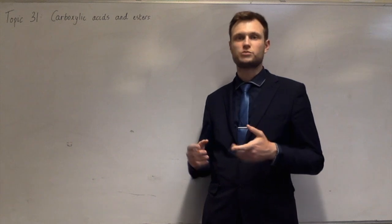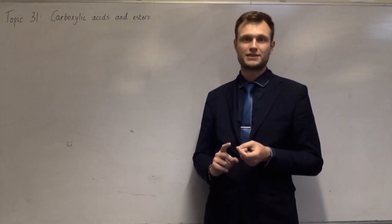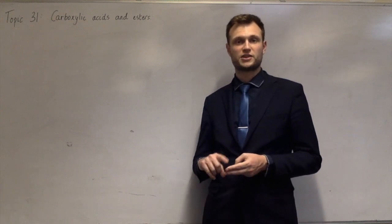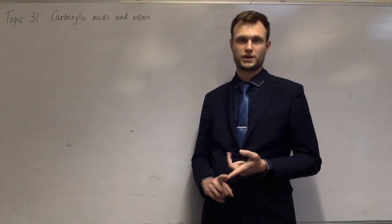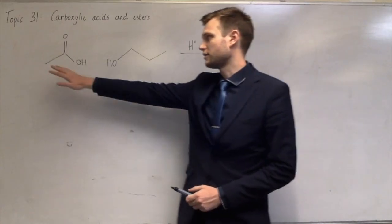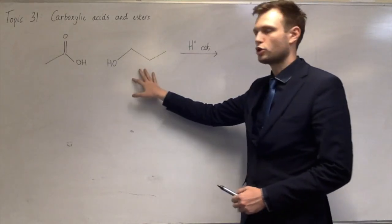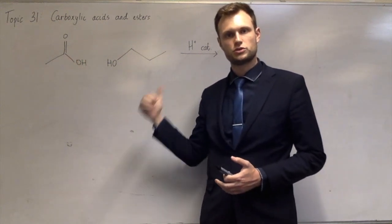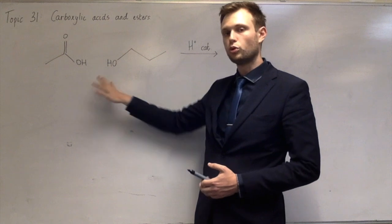And the most usual way of doing this is with carboxylic acids and alcohol. And with that, you need an acid catalyst. And on the specification, it gives the example of concentrated sulfuric acid. And in the reaction between this, which is ethanoic acid and propan-1-ol, what happens is they join together to make an ester bond, which I'll draw in a minute. And they lose water in the process.